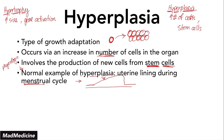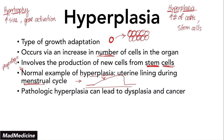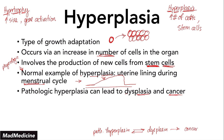There are also pathologic examples of hyperplasia, and that's very important to remember because pathologic hyperplasia can lead to dysplasia and cancer. This is a very important sequence of events: pathologic hyperplasia will eventually lead to dysplasia. Dysplasia can be reversed, but if left untreated, dysplasia can lead to many different types of cancer, which we'll discuss later.